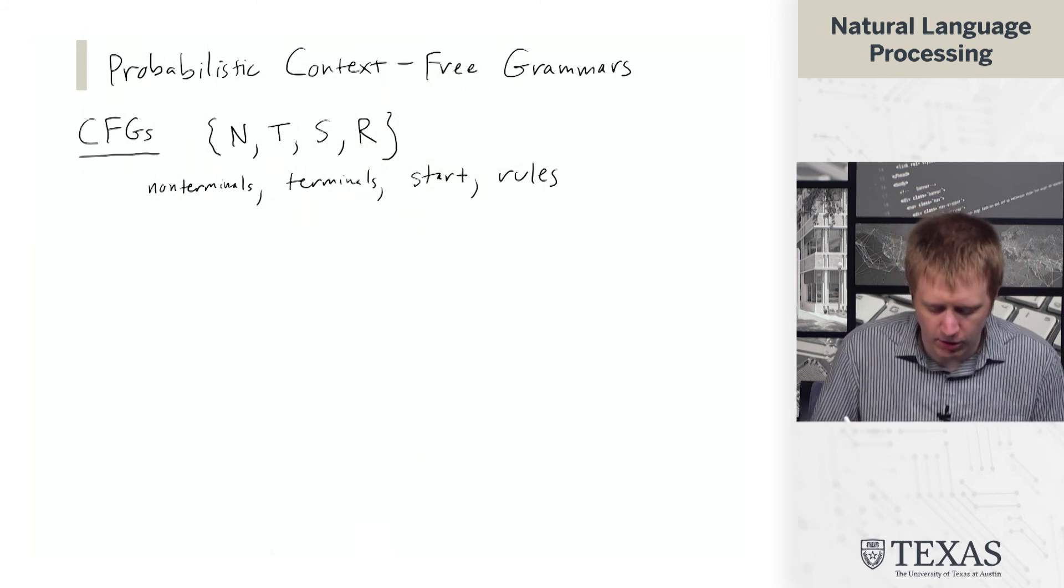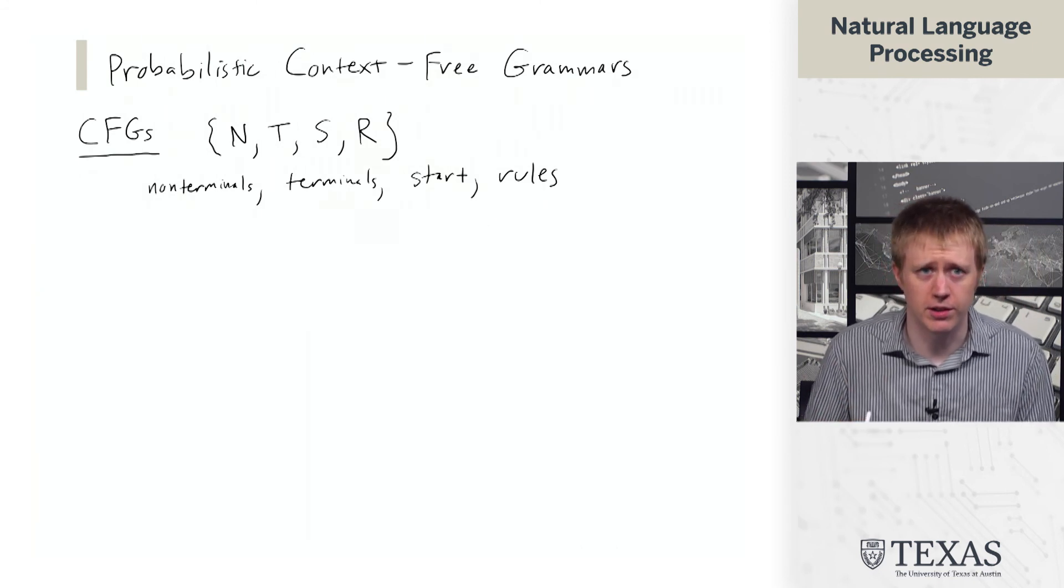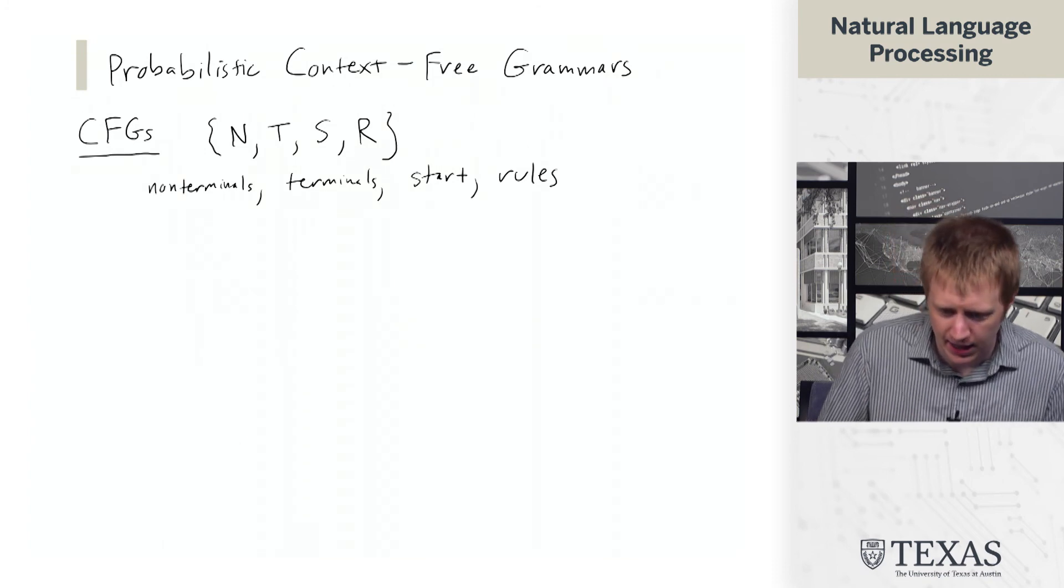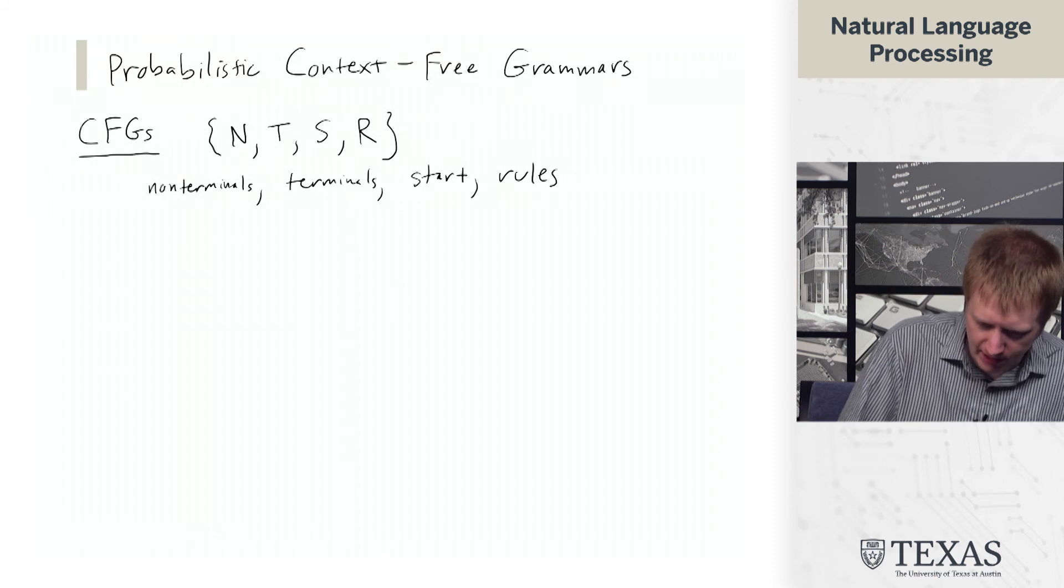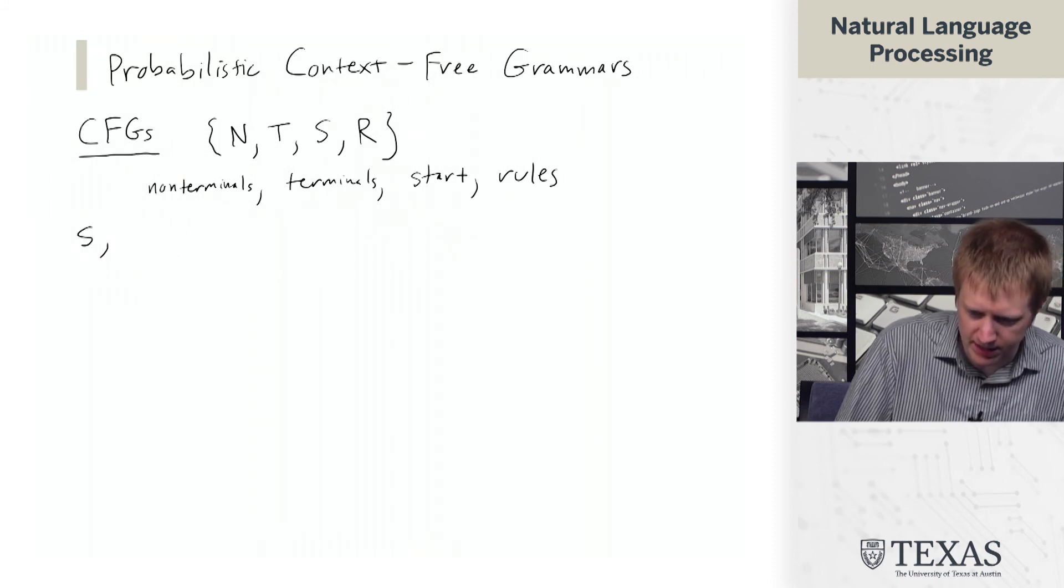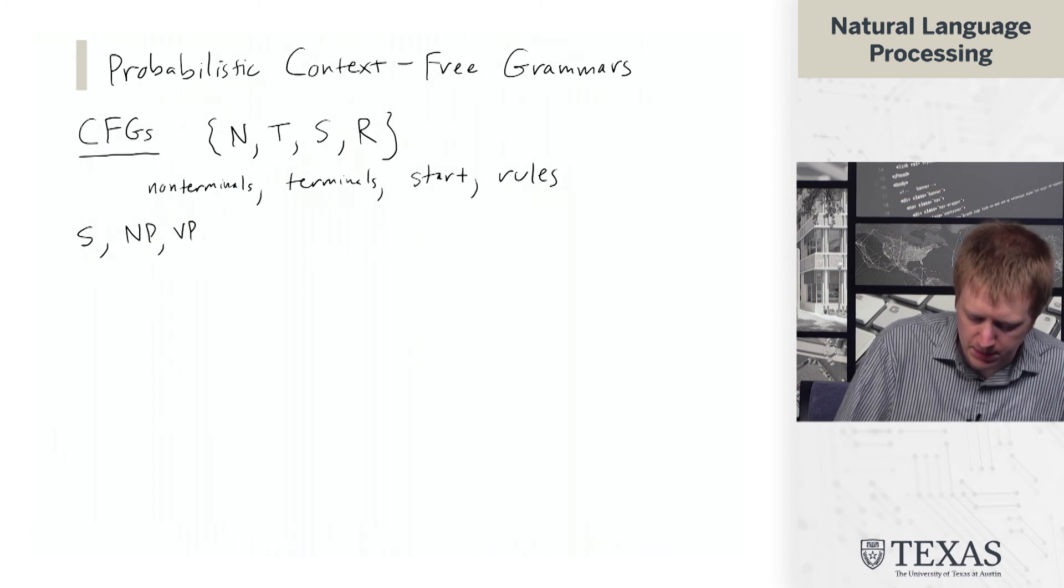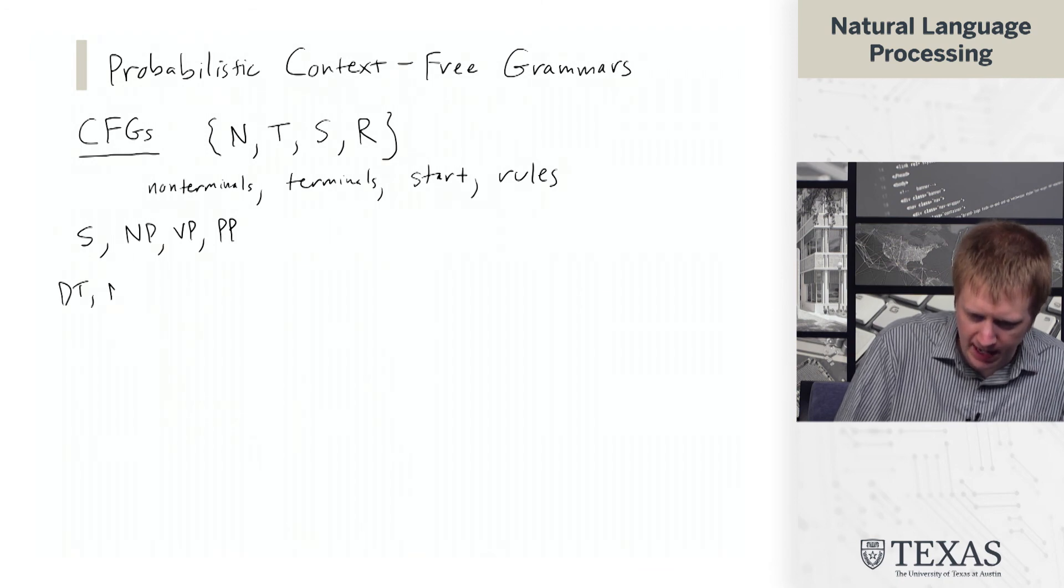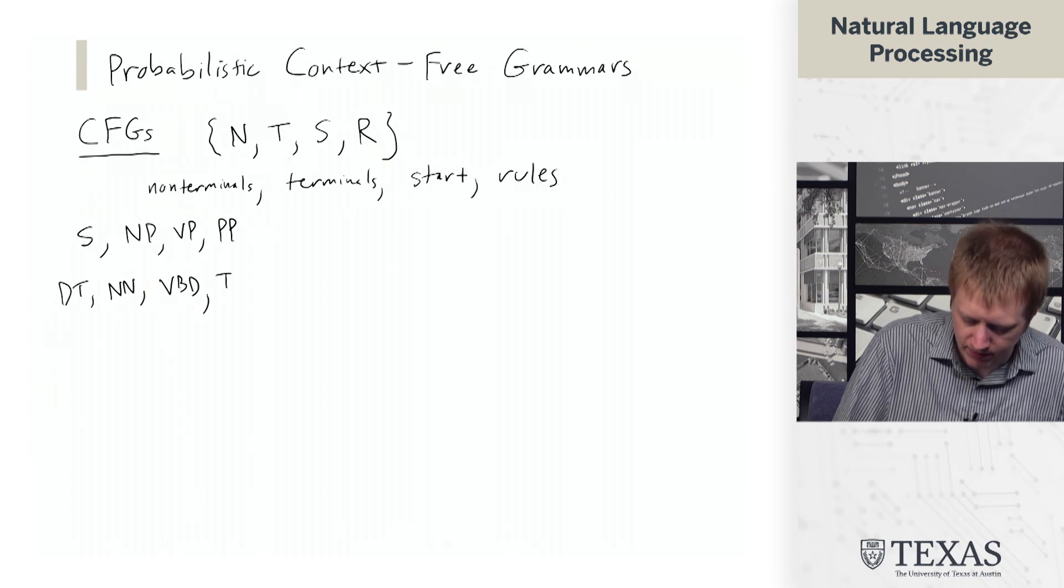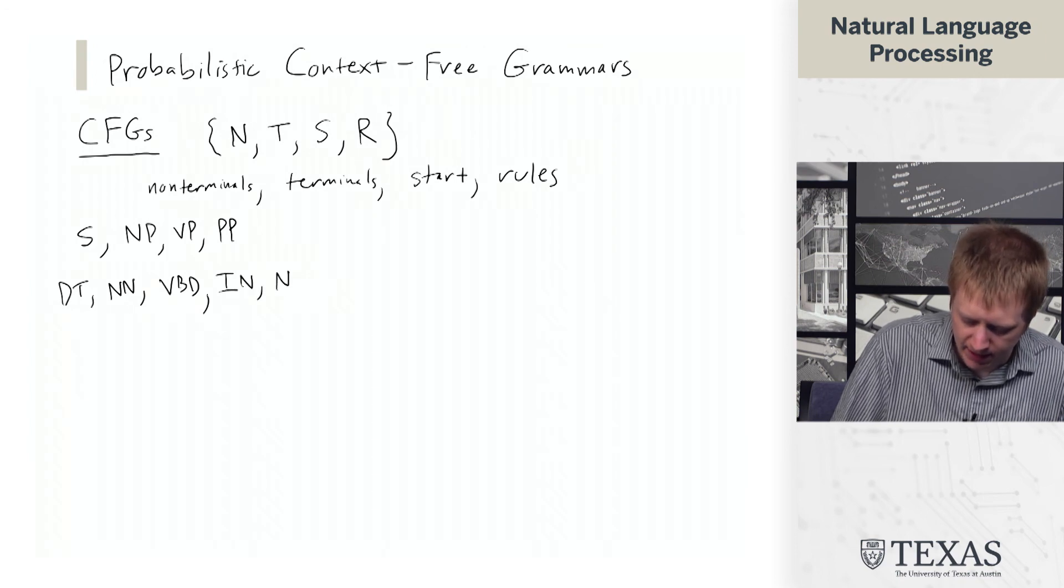If we think about the constituency grammars we've seen so far and cast them into this terminology, the non-terminals consist of symbols like S, NP, VP, PP, as well as part-of-speech tags: DT, NN, VBD, IN, NNS.